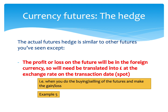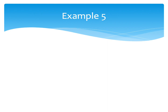The example we're going to use is Example 5 from your class notes. It's currently May. Jerry PLC is going to need to pay $500,000 in September. The current spot rate is $1.47 to the pound. September currency futures are currently quoted at $1.40 to the pound. The minimum contract size is £50,000. By September, the spot rate has moved to $1.32 to the pound and futures are quoted at this rate.